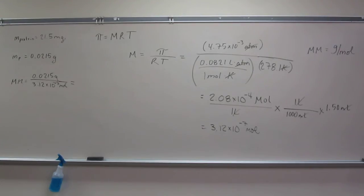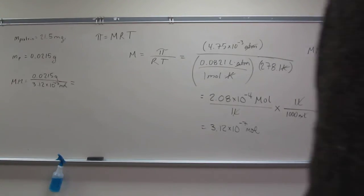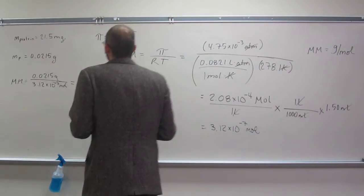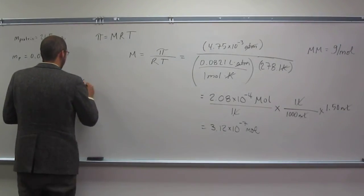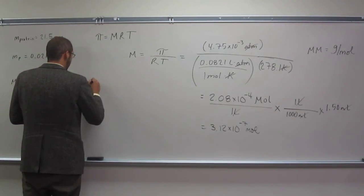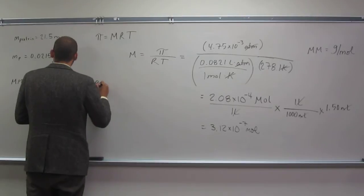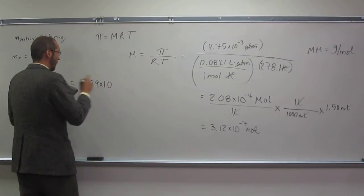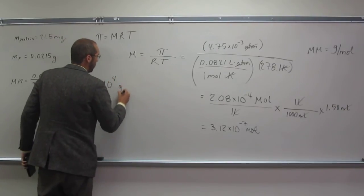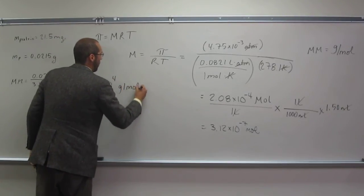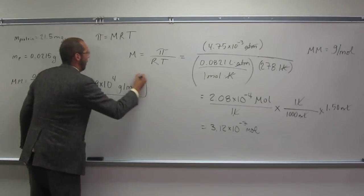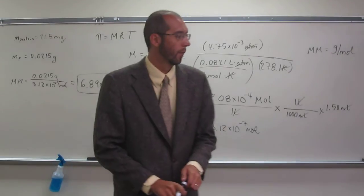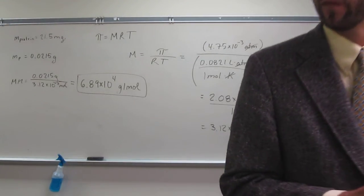So let's see what it is. So 0.0215 divided by that answer and I get something that's 6.89 times 10 to the 4.